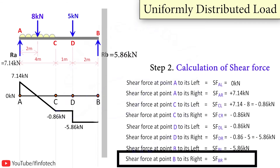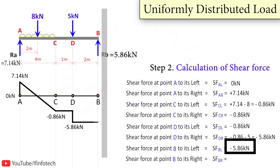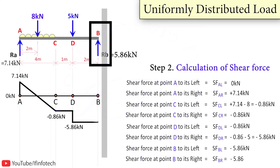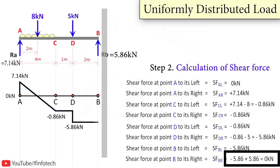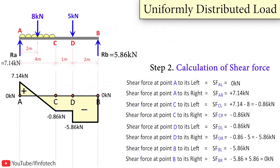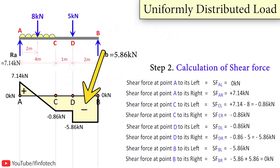Taking section to the left of point B, there is no load between point D and B, so shear force remains constant at minus 5.86 kN. I make a horizontal line at minus 5.86 kN. Taking section to the right of point B, carrying forward minus 5.86 kN, there is a 5.86 kN upward reaction force which is positive. So minus 5.86 plus 5.86 gives 0 kN. I mark 0 on the reference line. Portions above the reference line are marked plus and below are marked minus. The shear force diagram is now complete.